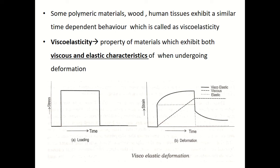That small amount of plastic strain that disappears with time is called time-dependent elastic behavior of the plastic strain. It is called elastic behavior because it regains back with time — the plastic strain disappears with time. This is called anelasticity. In metallic materials, this is usually negligible because the value is very small — the amount of plastic strain that disappears with time is very small.